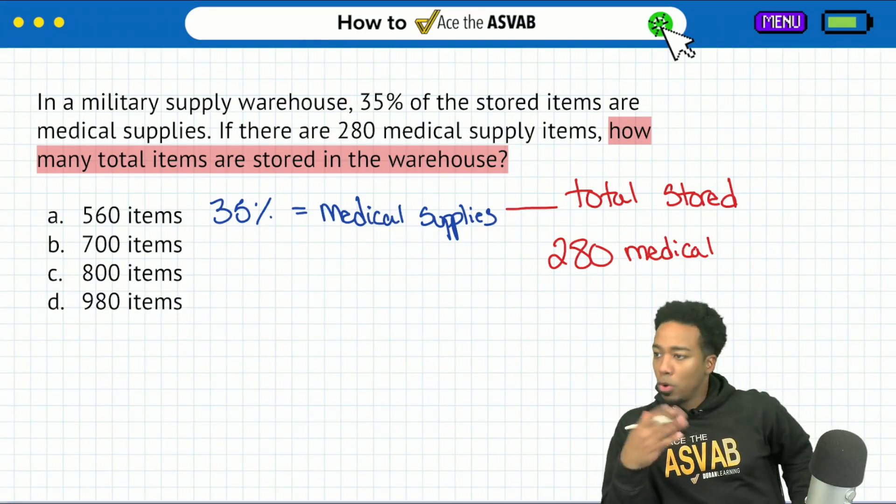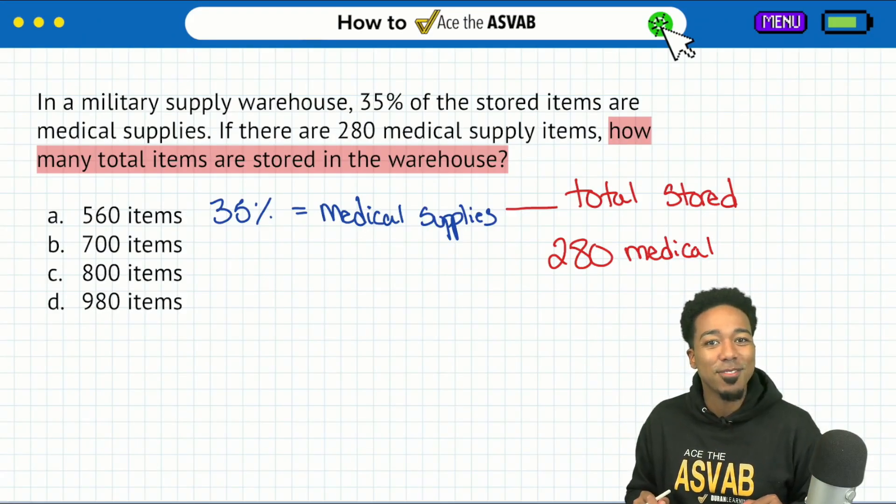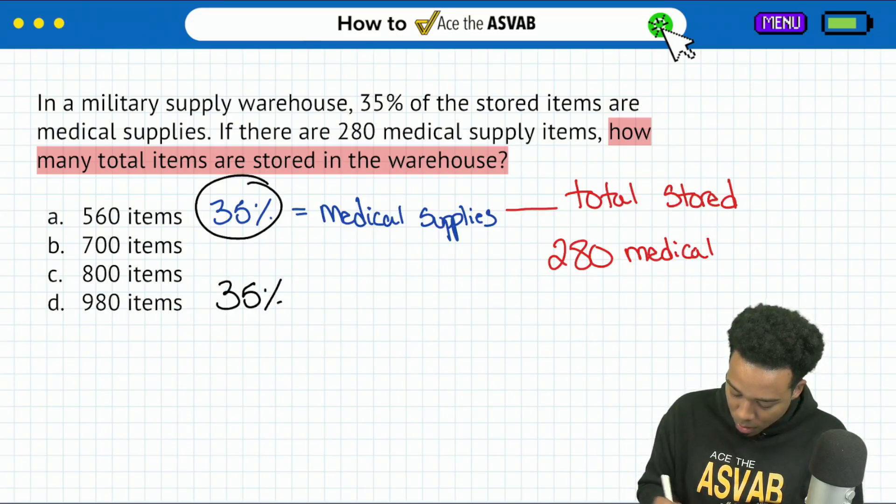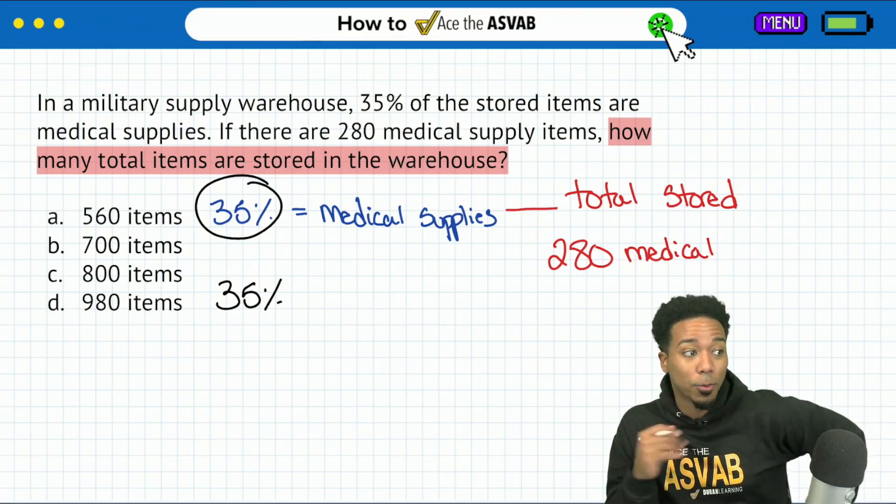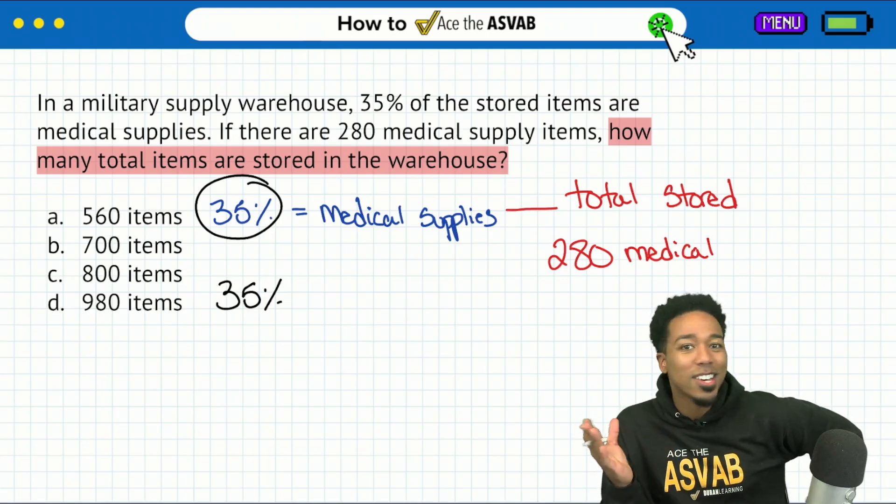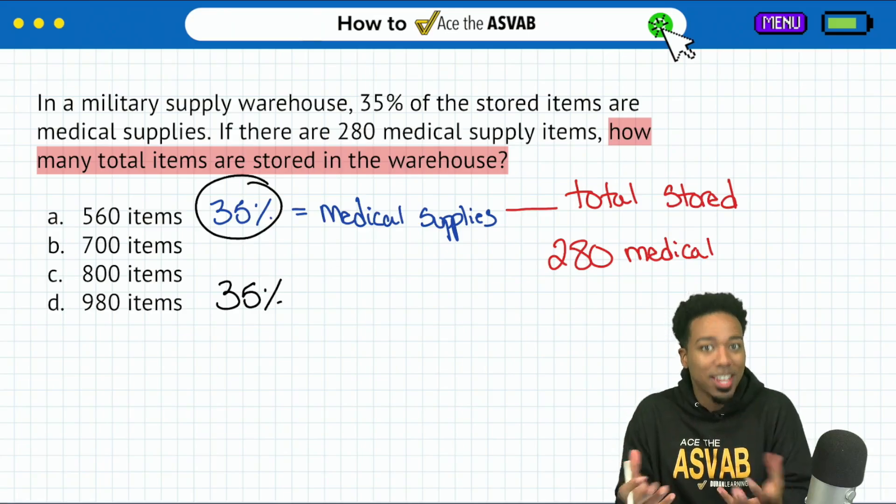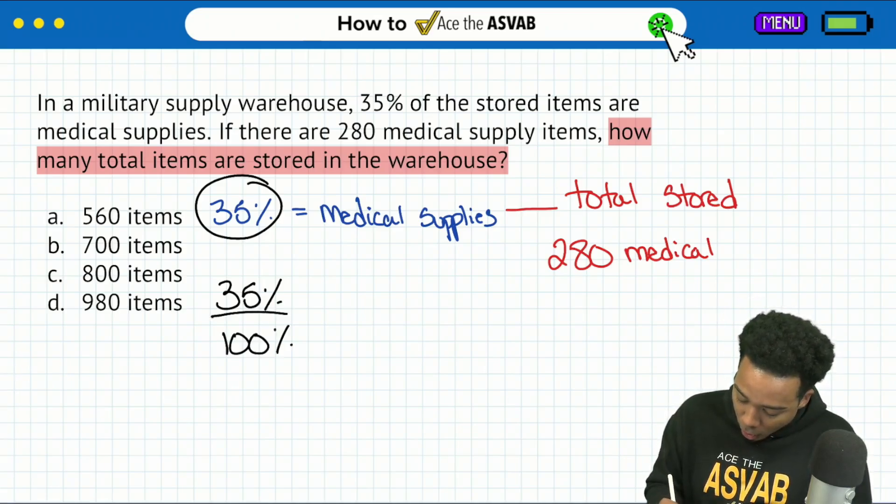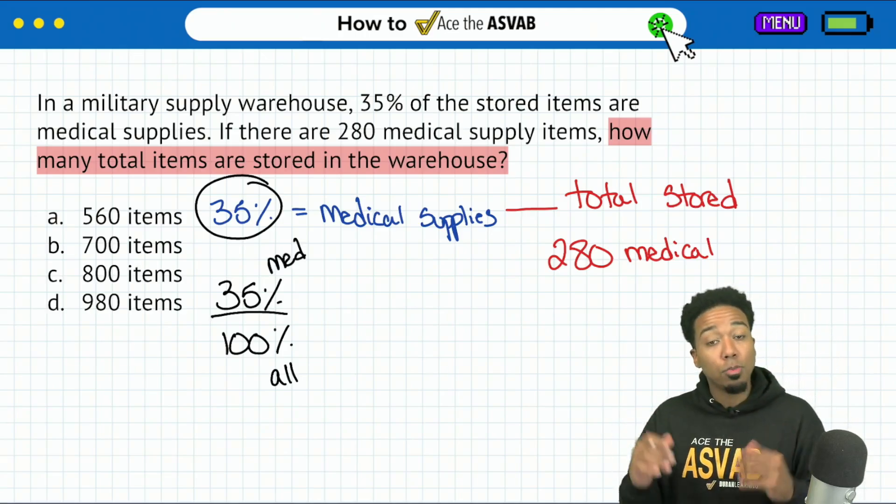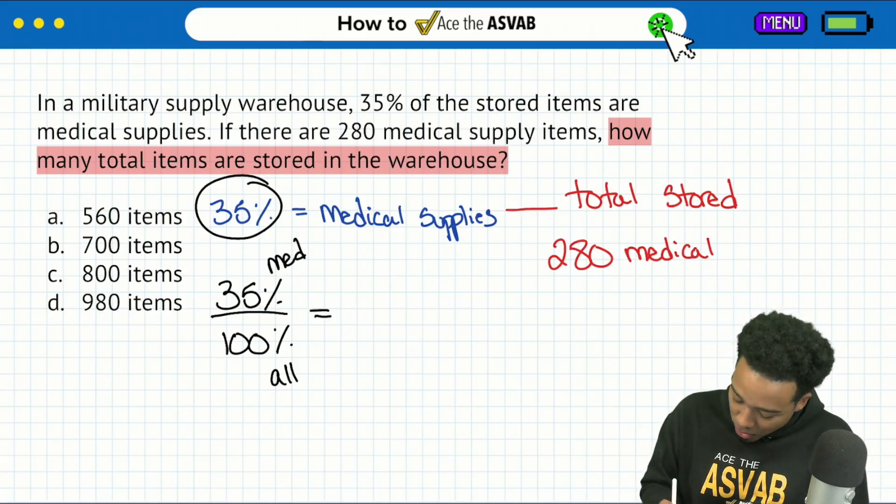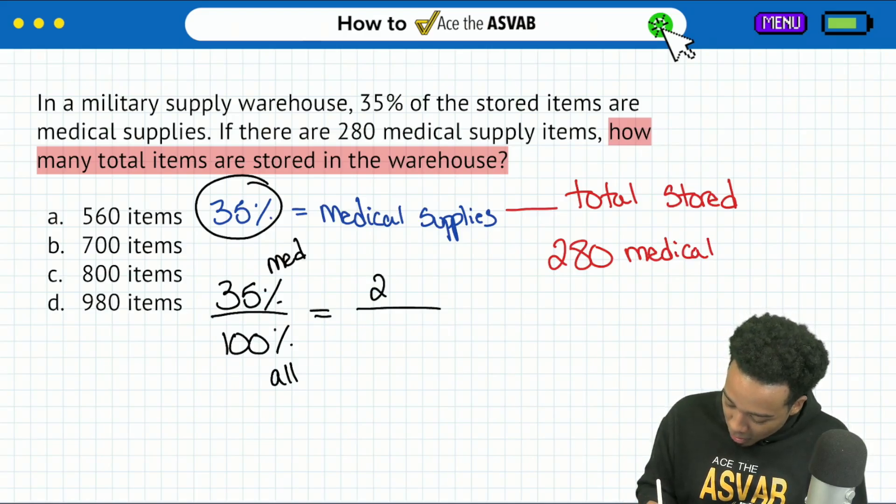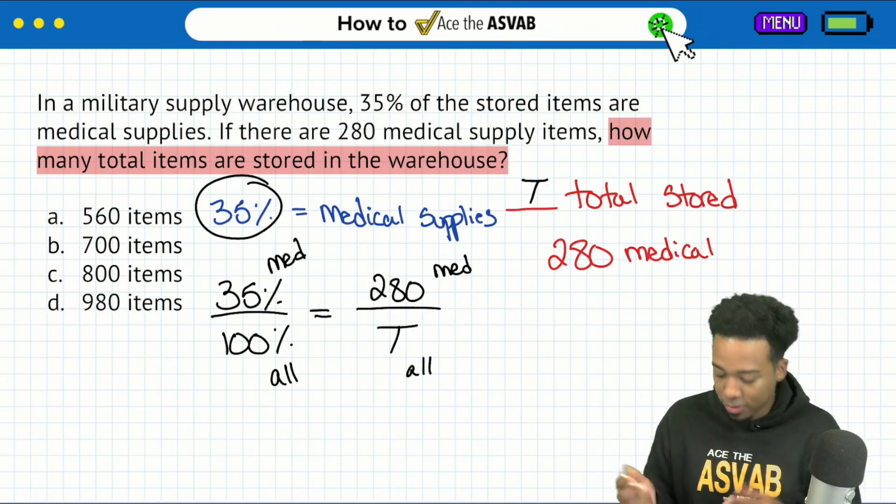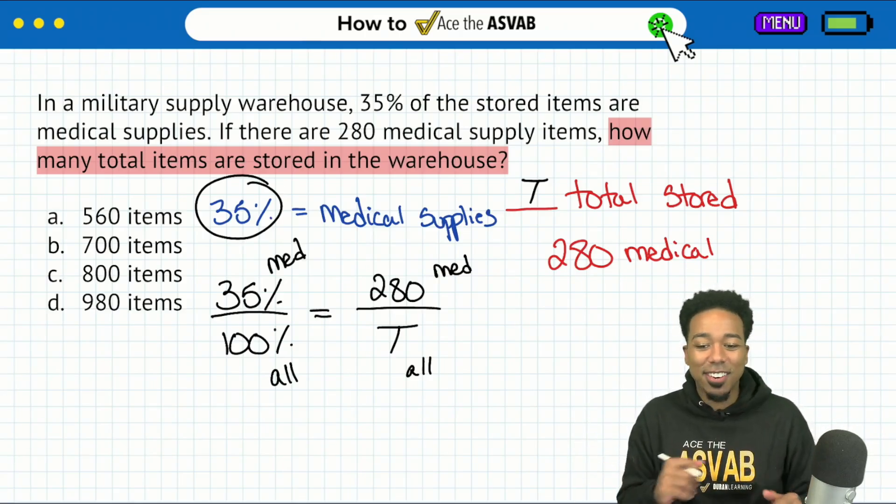Here's how we do this. We write a proportion. We just make sure that we can compare the same things in the same way. So what I'll do is I'll say, okay, let me do the percentage, 35%. What did they compare the 35% to? Well, guess what? What are we comparing any percent to? Always 100%. It's always out of 100%. The word percent stands for out of 100. So 35% out of all supplies, 35% is medical, 100% is all the supplies equals compare the same things in the same way. We have 280 medical and we're looking for the total or all. Boom. We have a proper proportion laid out and we can have ourselves a good time.